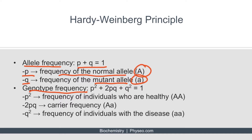The genotype frequency can be determined by using the equation P squared plus 2PQ plus Q squared equals one. P squared refers to the frequency of individuals who are healthy, so their genotype is big A big A. 2PQ represents the carrier frequency, with genotype big A little a. Finally, Q squared represents the frequency of individuals who have the disease, so their genotype is little a little a.